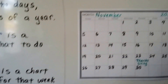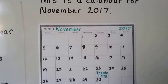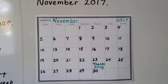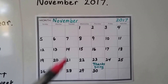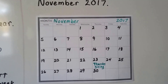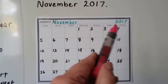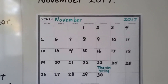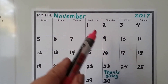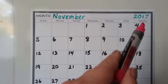So this is a calendar for November of 2017. November 1st falls on a Wednesday. We can see all the days of the week along the top here: Sunday, Monday, Tuesday, Wednesday, Thursday, Friday, Saturday.